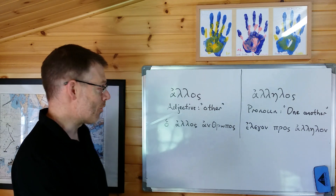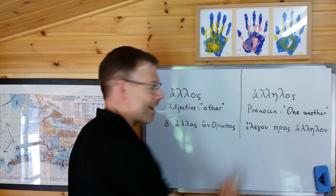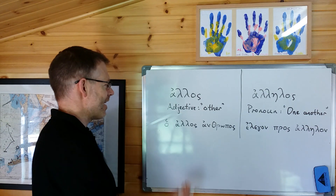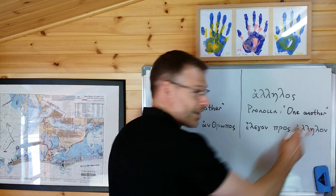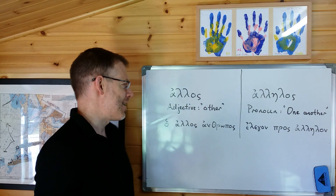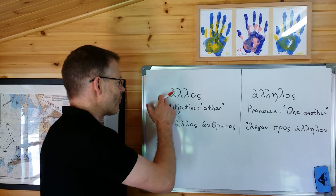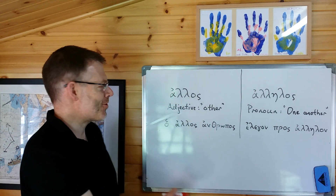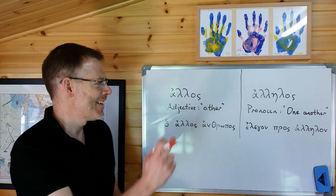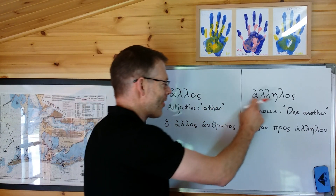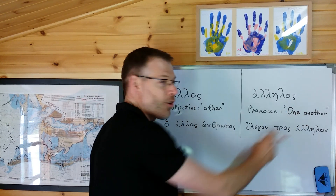They're similar words — alos, alelos — just like 'other' and 'one another' are similar. But the short one, alos, means 'other,' and the longer one, alelos, means 'one another.'